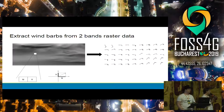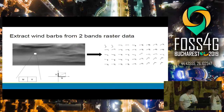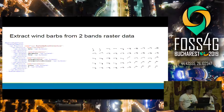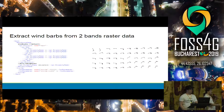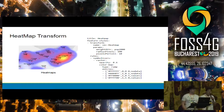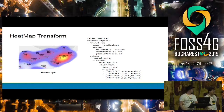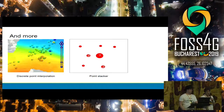We can do fancier things — for example, rasters containing only two bands representing the U and V components of a wind vector. We do the math in SLD or CSS, extract the pixels as points, use U and V as attributes, do some math, and get wind barbs. You can also do heat maps — start from point data and get a heat map displayed server-side on the fly — and point clustering, discrete point interpolation using Barnes surfaces, and so on.